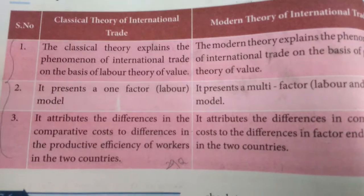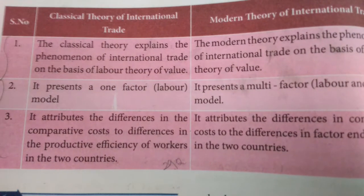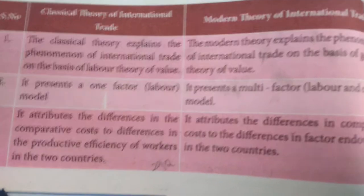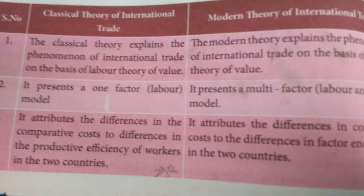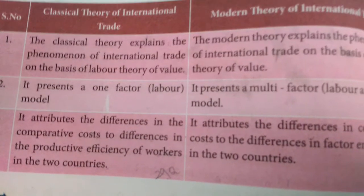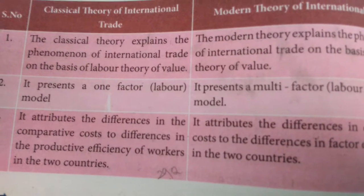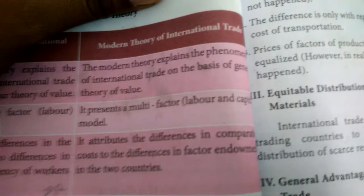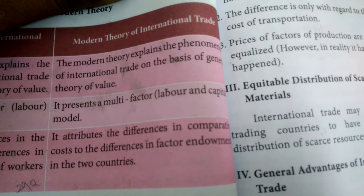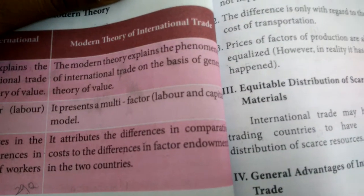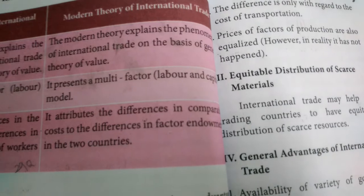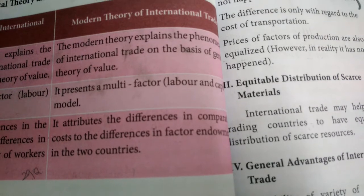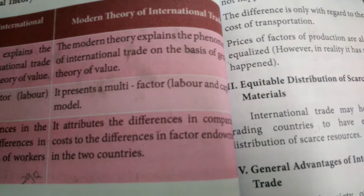The classical theory attributes differences in comparative cost to differences in the productive efficiency of workers in two countries — the difference in productivity of workers is the reason for comparative cost differences. But the modern theory attributes comparative cost differences to differences in factor endowments in the two countries — the availability or abundance of factor endowments is the reason for making comparative cost differences.